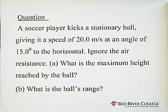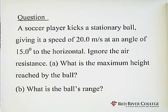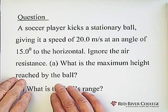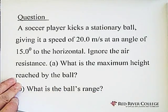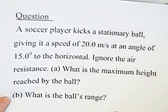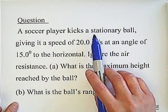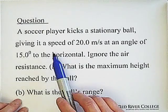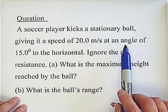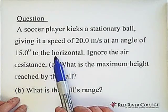Ignore the air resistance. What is the maximum height reached by the ball? What is the ball's range? For this question, we first make a picture to label all the information. A soccer player kicks a stationary ball — the ball is initially at rest — giving it a speed of 20 meters per second at an angle of 15 degrees to the horizontal.